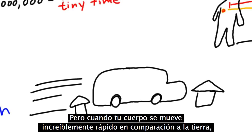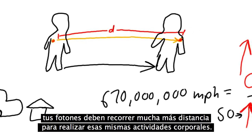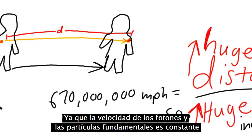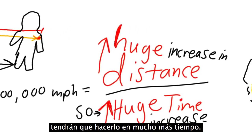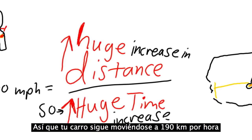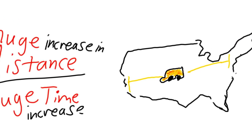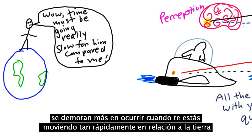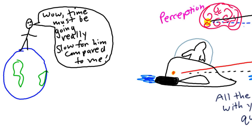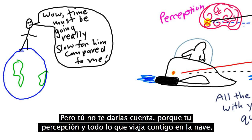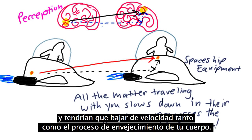But when your body moves really, really fast compared to Earth — much closer to the speed of light — then your photons have to travel a much larger distance for those same bodily activities to occur. Since the speed of the photons and fundamental particles is constant, but they need to cover a much larger distance, they will have to do it in a much longer time. So your car is still moving 120 miles per hour, but it's going to take a lot longer to drive from New York to California than it is to drive next door. Since the same bodily change that happens on Earth takes much longer to occur when you are moving so fast relative to Earth, we say that time slows down for you relative to people on Earth. But you wouldn't notice a difference, because your perception and everything traveling with you on the spaceship also rely on the behavior of light-speed particles, and would have to slow down just as much as your body's aging process.